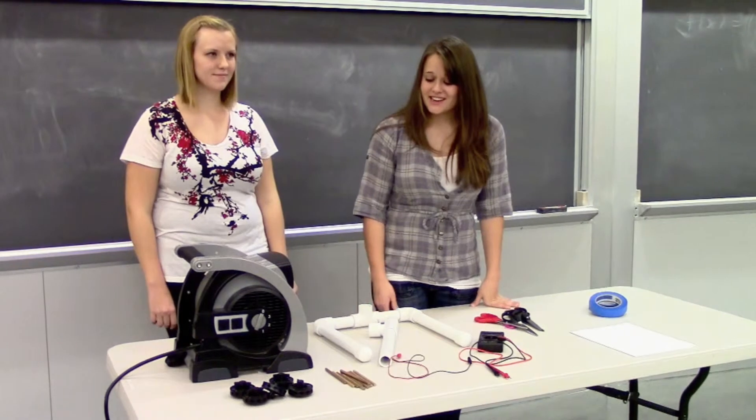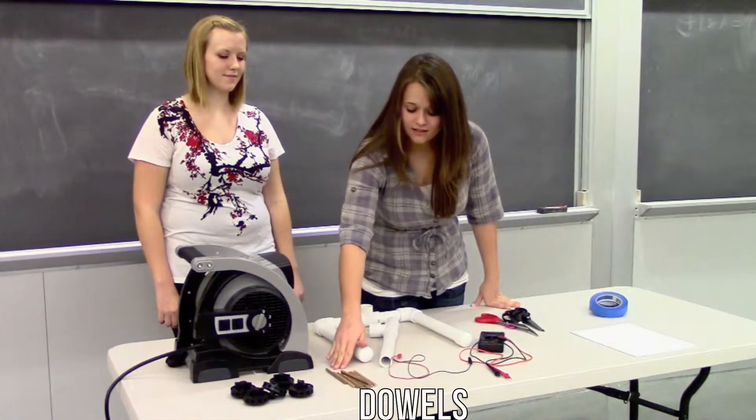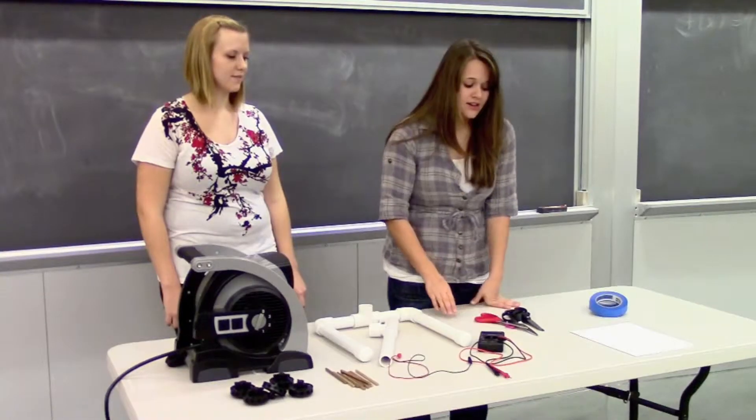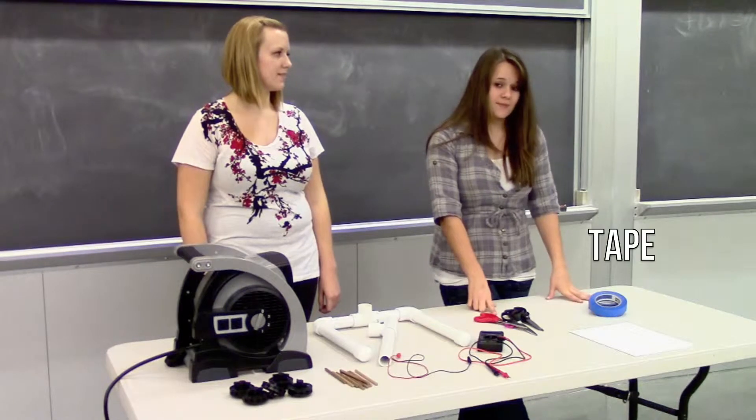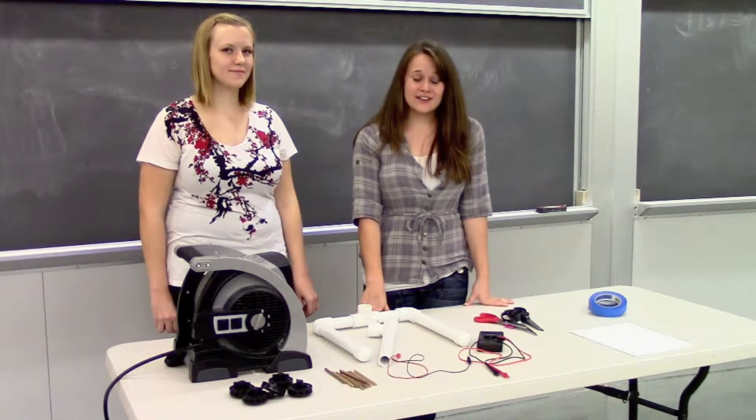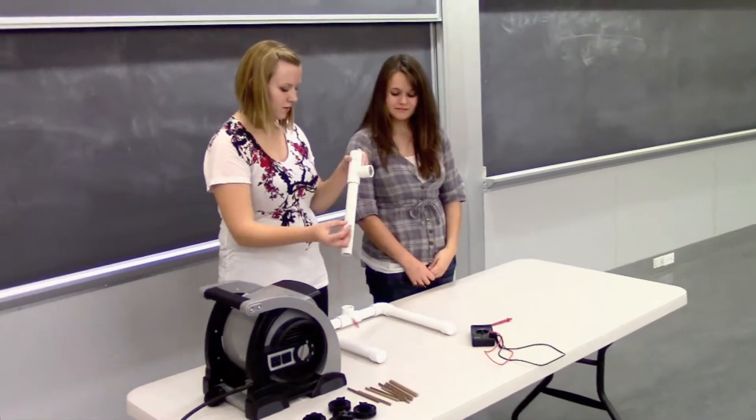The kit includes the fan, hubs, dowels, wind turbine stand, and multimeter. You will need to have scissors, tape, and paper. Make sure the kit contains each item; if not, contact us immediately. To set up this activity, first assemble the wind turbine stand.